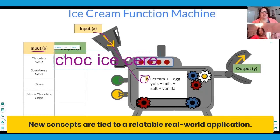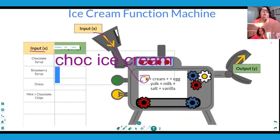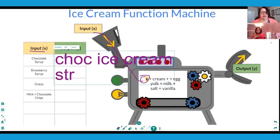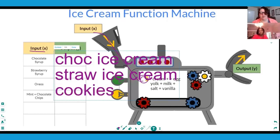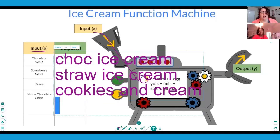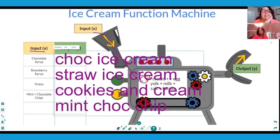What if I put in strawberry syrup instead? Strawberry ice cream. If I put in Oreos, what do I get? Cookies and cream. And if I put in mint and chocolate chips, what do I get? Mint chocolate chip. This is the same thing.